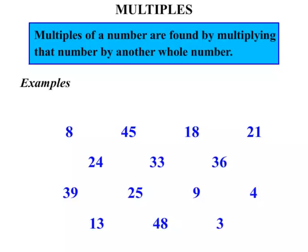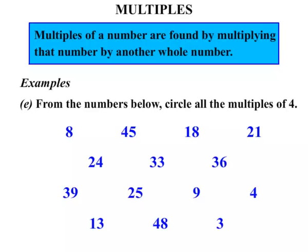Now here we have a group of numbers and it says from the numbers below, circle all the multiples of 4. Well let's look at each one one at a time. 8, now the way I think about it is does 4 go into 8? Well yes it does, so it would be a multiple of 4. 8 is a multiple of 4.